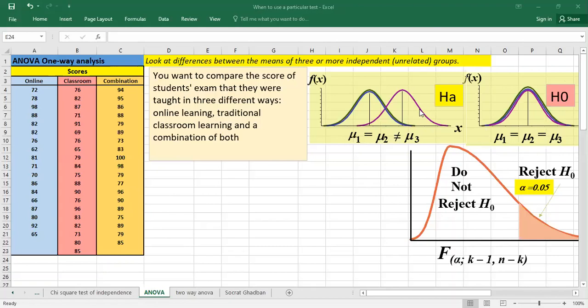However, the alternative hypothesis tells us that one of these groups is different than the other. It can be the average of online or the average of classroom that it's different than ours. And we have also to set alpha 0.05.